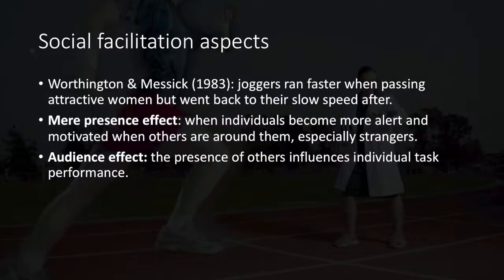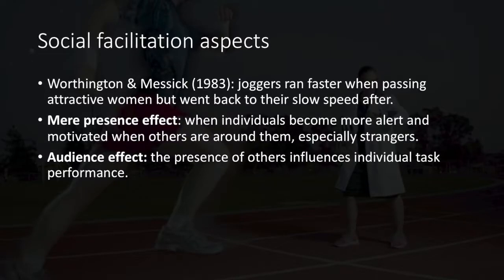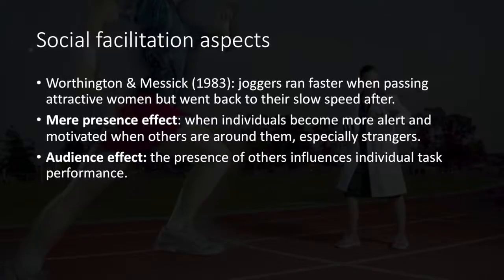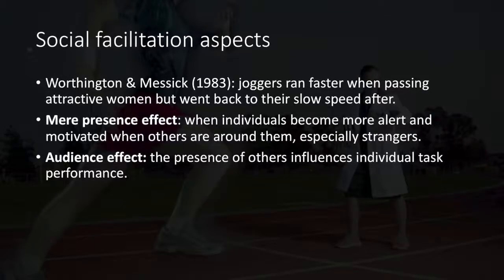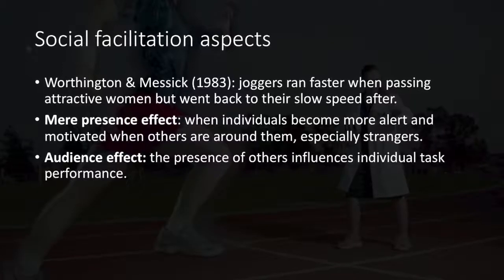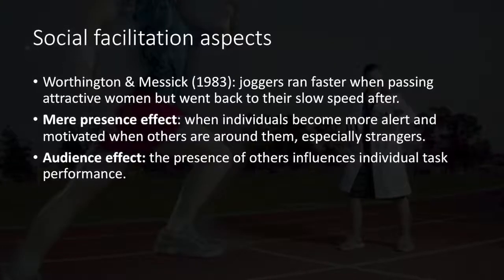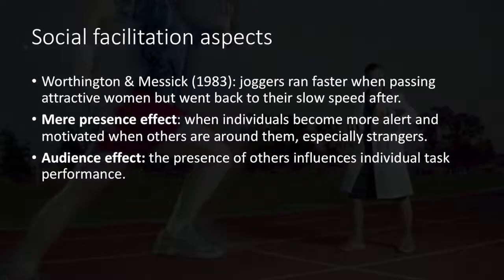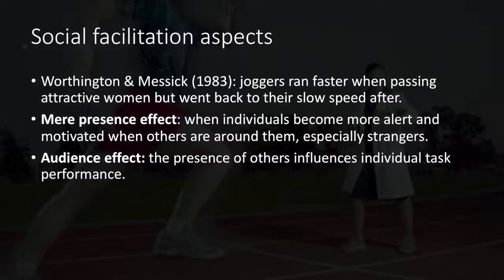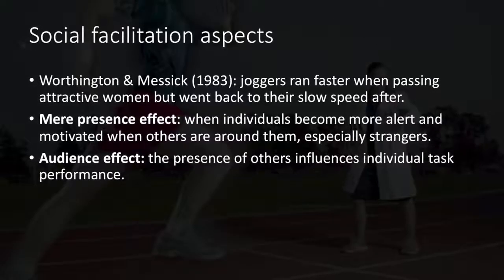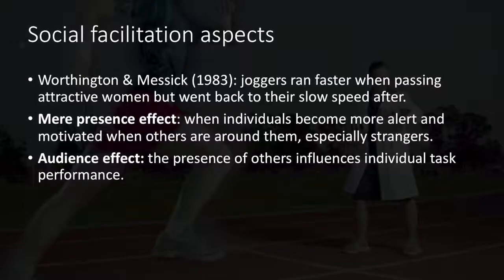Worthington and Messick in 1983 found that joggers ran further when passing attractive women, but went back to their slow speed after. This connects to Darwin's sexual selection theories in attracting mates for reproduction.